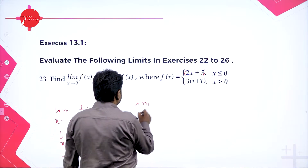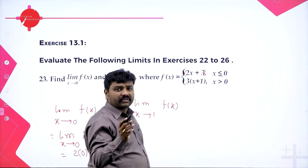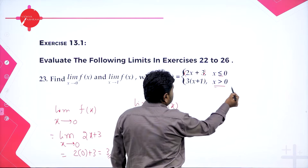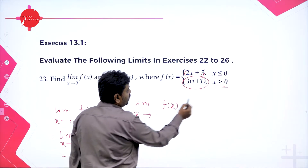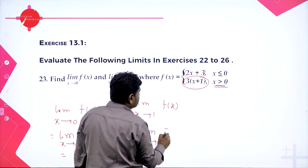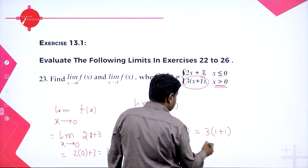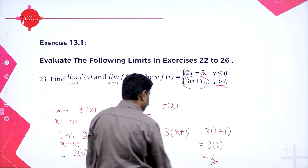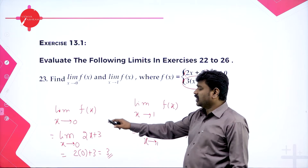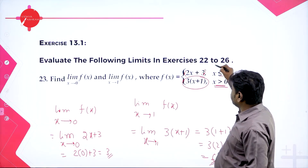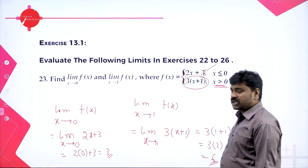For limit x→1 of f(x): since 1 > 0, we choose the function for x > 0, which is 3(x + 1). Substituting x = 1 gives 3(1 + 1) = 3 × 2 = 6. The important thing here is choosing the correct piece of the function based on where x is tending to.